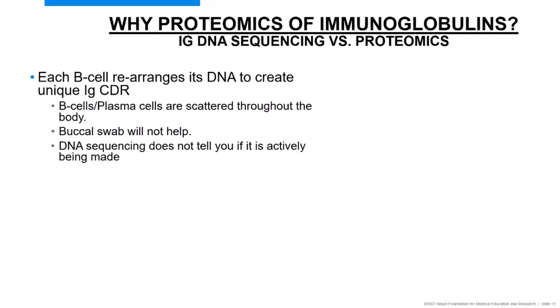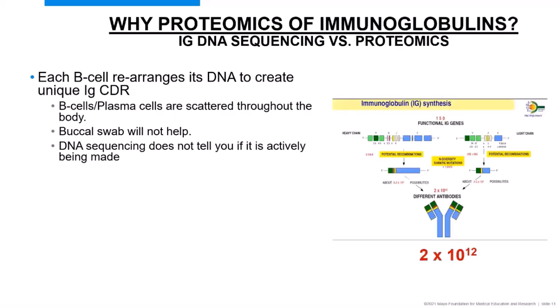That's why I prefer looking in the serum — it tells you a lot. The challenge is that B cells rearrange portions of DNA for both heavy and light chains. If you look at the number of combinations, you find somewhere on the order of 2×10^12 different combinations, which is quite intimidating when you're trying to find an individual immunoglobulin.